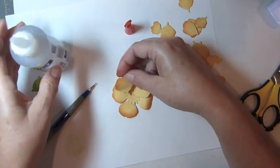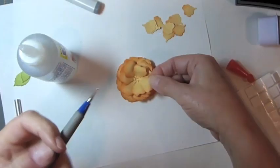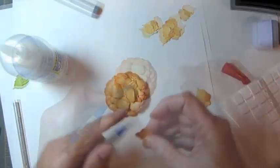Continue adding petals, always overlapping gaps in the previous layer. As you build your layers, switch to progressively smaller petals.